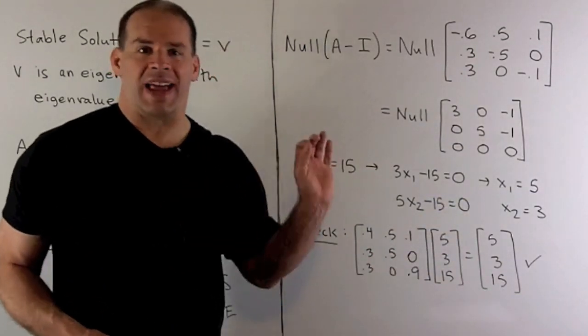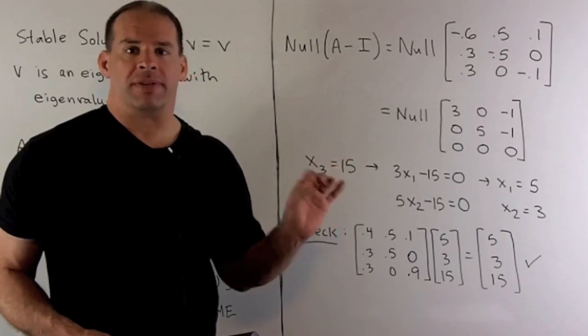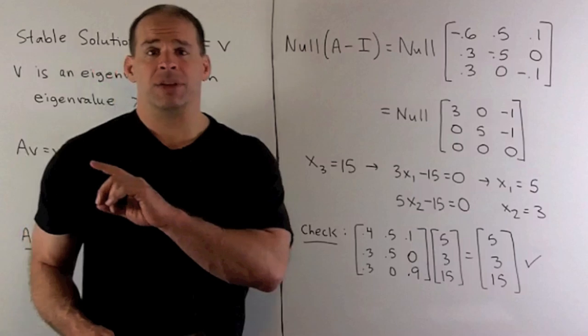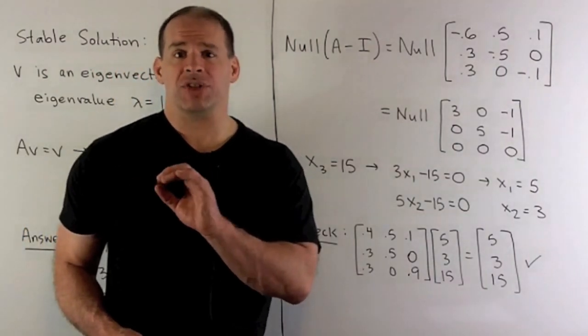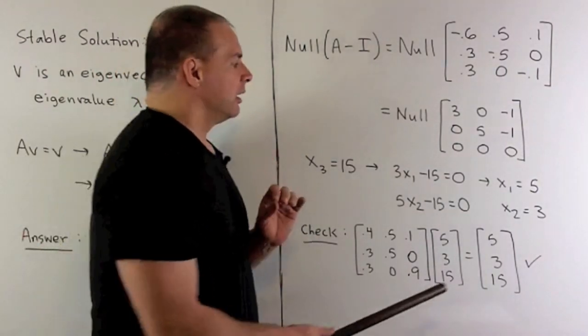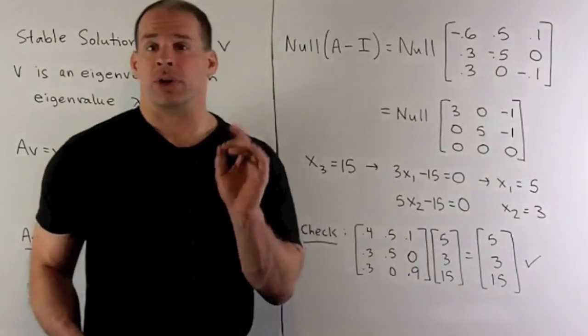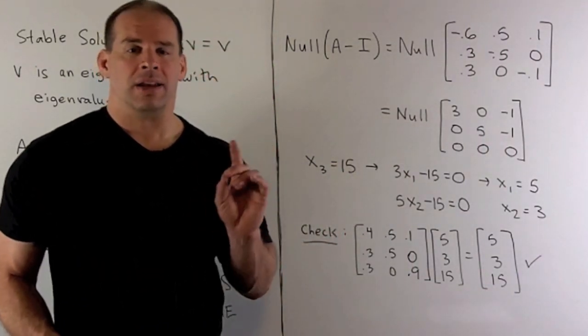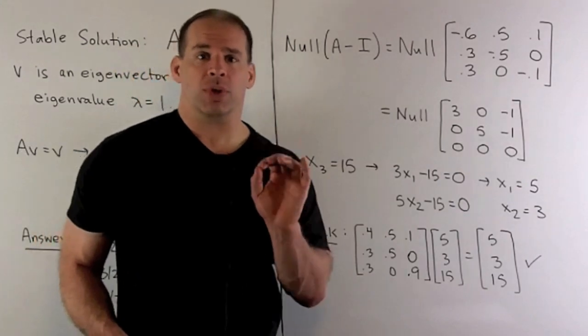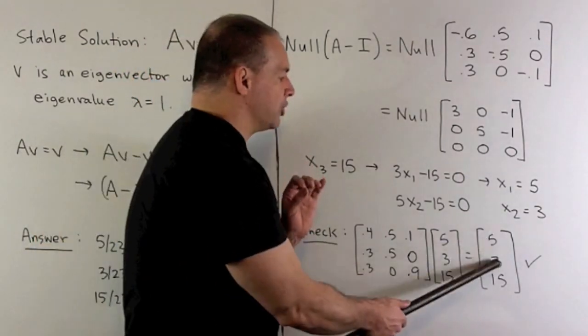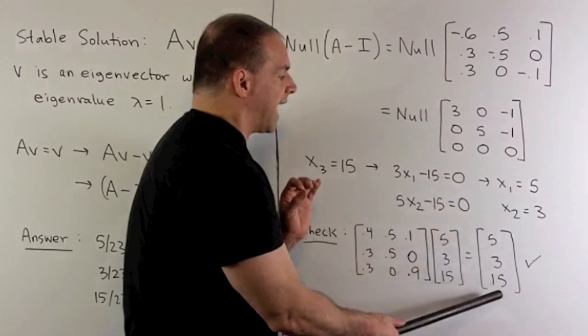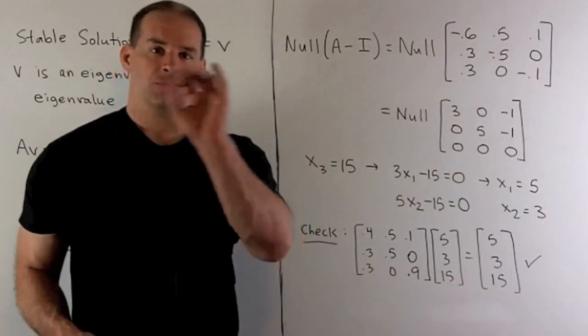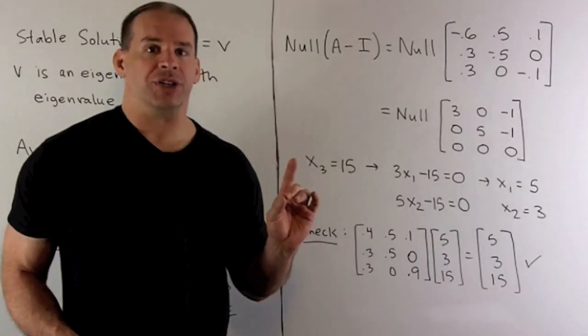Since this is an eigenvector, we'll also have a stable solution if I multiply by a constant. In our case, we're working with populations, so we have to have that each entry is greater than 0, so I can only multiply by positive constants. For this to be useful, in this case, the total population would be 23. We just add up.